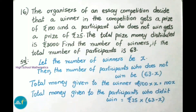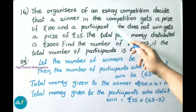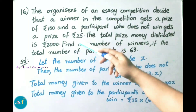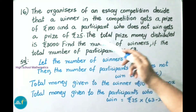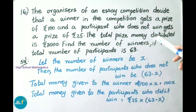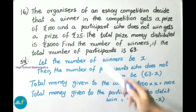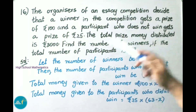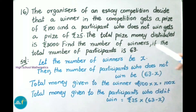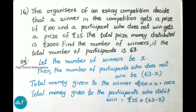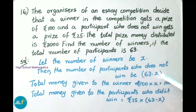See now question number 16. The organizers of an essay competition decide that a winner gets a prize of 100 rupees and a participant who does not win gets 25 rupees. The total prize money distributed is 3000 rupees. Find the number of winners if the total number of participants is 63. Let the number of winners be x. Then the number of participants who do not win is 63 minus x.